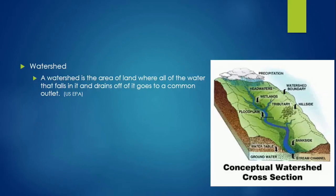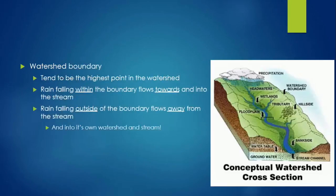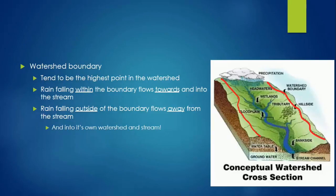Of course, actual watersheds are not circular. Instead, they have irregular boundaries that follow the topography of the land. The watershed boundary tends to be the highest point in the watershed. Rain falling within the boundary flows towards and into the stream, while rain falling outside of the boundary flows away from the stream and into another watershed.